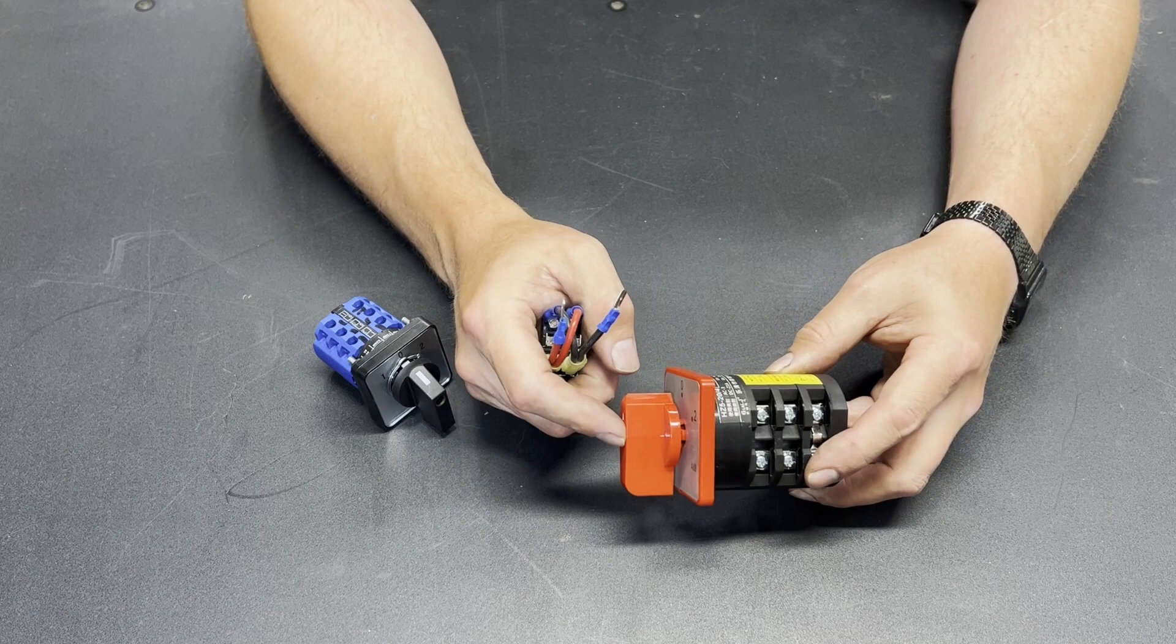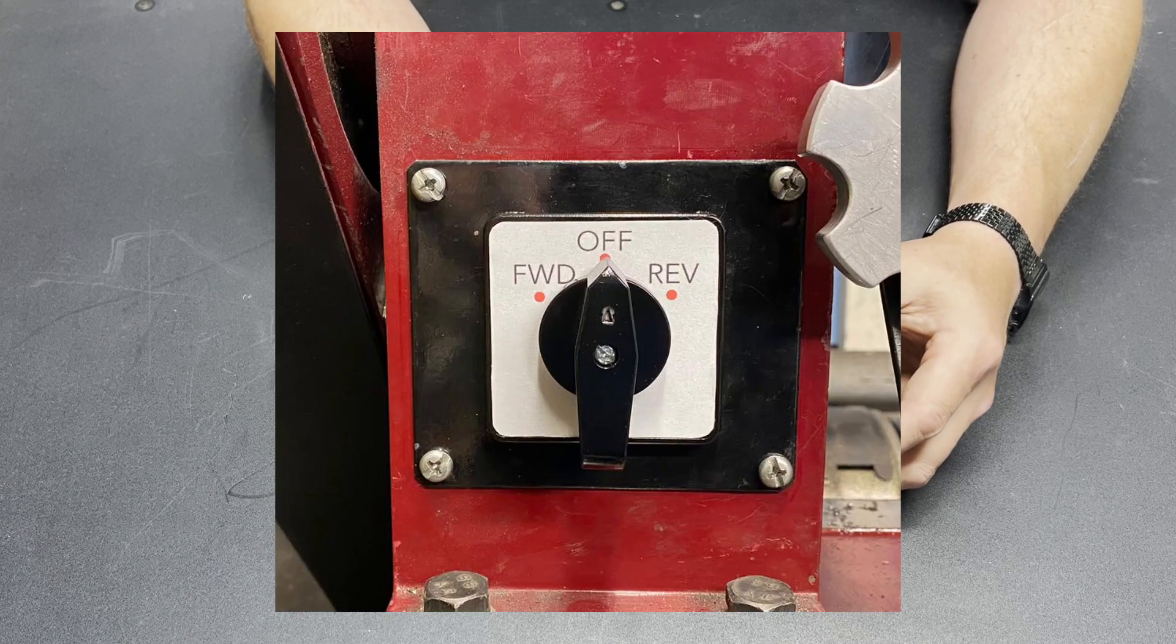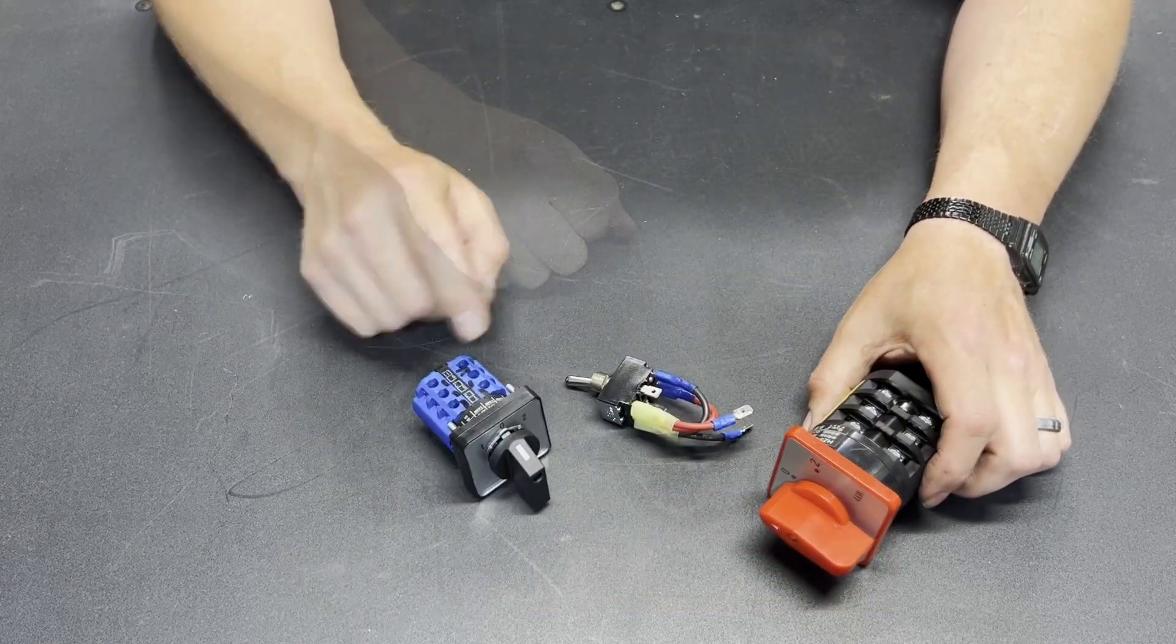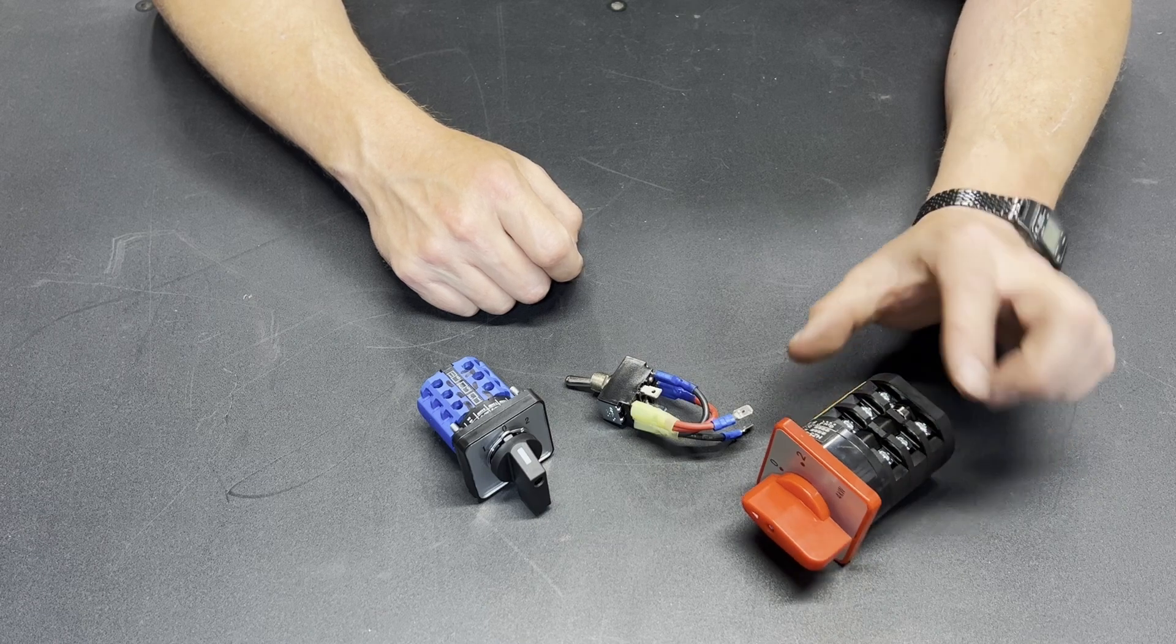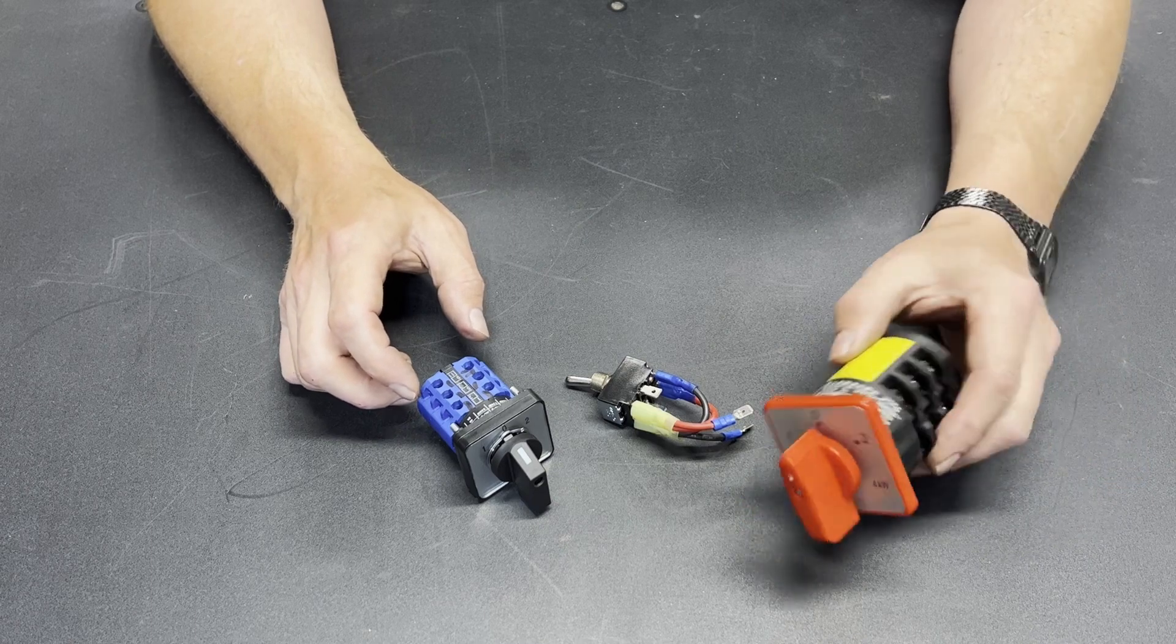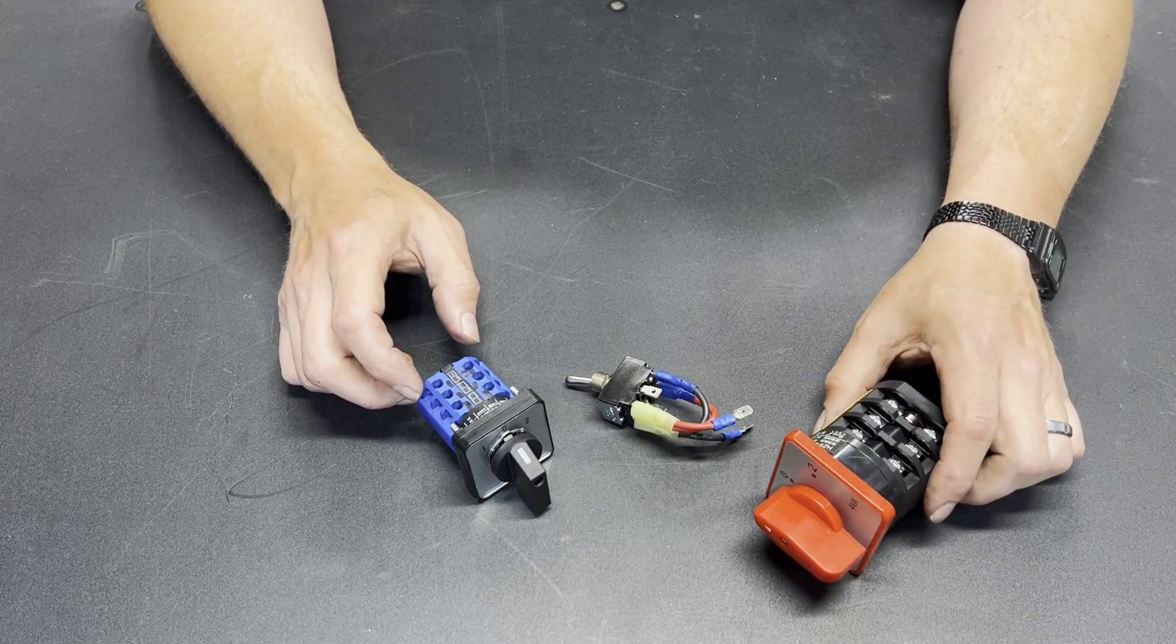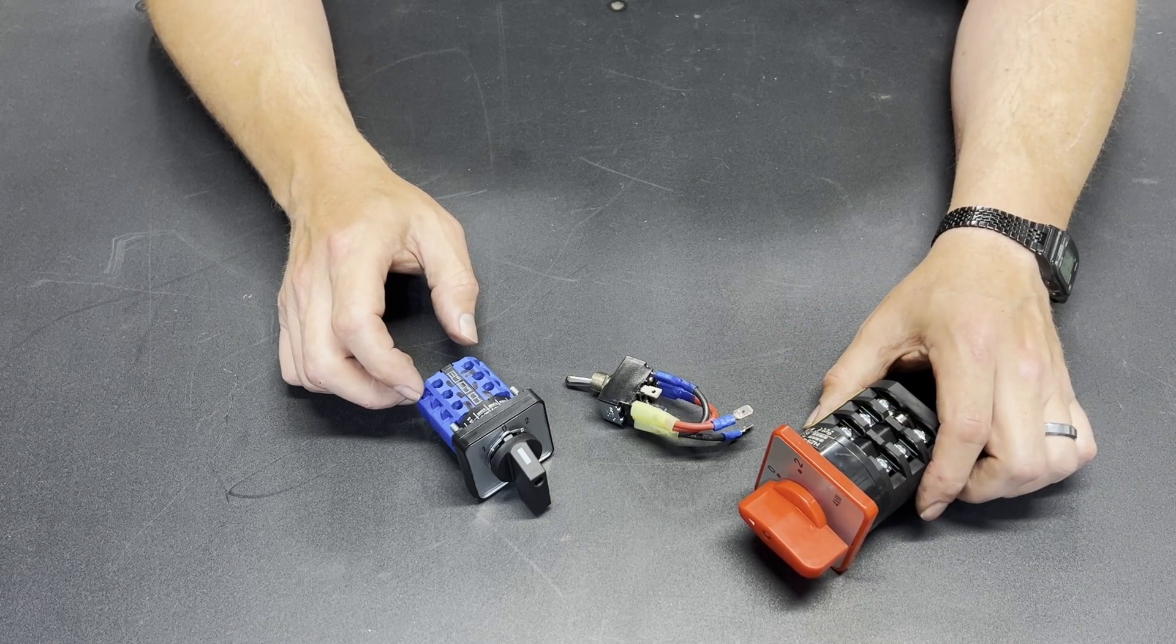This is the switch that I'm using in my lathe, because it is a much higher amperage rating than either of these two switches. I've been inside this switch, and the contacts are tiny. I've been inside this switch, and the contacts are huge, and it makes sense. They're not going to make the switch that much bigger to put tiny little contacts in it. So going with a switch like this is going to handle a lot more amps.